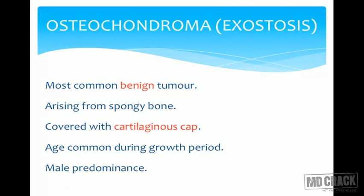Osteochondroma, also known as exostosis, is the commonest benign tumor of the bone — another MCQ point. It arises from spongy bone and is covered by a classical cartilaginous cap, which should also be remembered. It is seen during the growing period with male predominance.